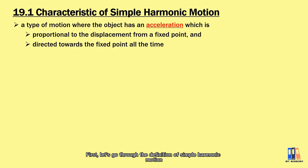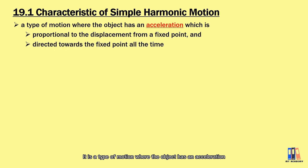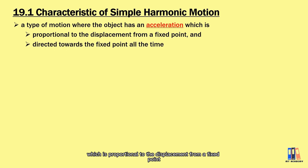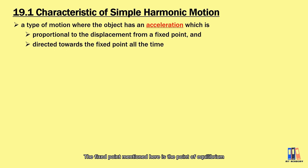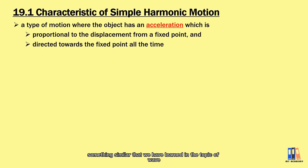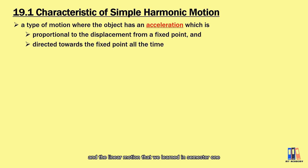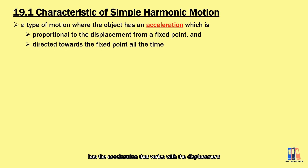First, let's go through the definitions of simple harmonic motion. It is a type of motion where the object has an acceleration which is proportional to the displacement from a fixed point, and the direction is always toward the fixed point. The fixed point mentioned here is the point of equilibrium, which is something similar to what you have learned in the topic of waves in form 4 physics. The main difference between simple harmonic motion and the linear motions we learned in semester 1 is that the object has acceleration that varies with the displacement.